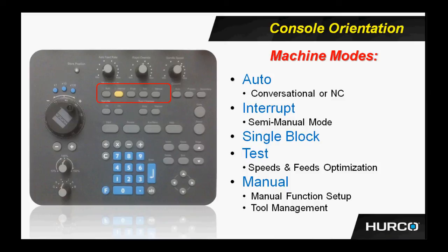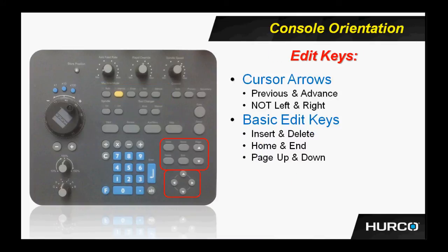We have the edit keys. In the upper box, we have the basic edit keys you would expect: insert and delete, home and end, and page up and page down. In the bottom red box, we have the cursor arrows — up and down and previous and advance. We refer to our left and right buttons as previous and advance, not left and right. The reason for that is if you're on a page that has two columns and you depress the right arrow key, you are not going to move to the right column; you will advance to the next screen, the next block, the next tool, and so forth.